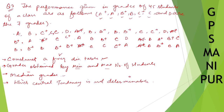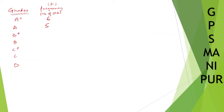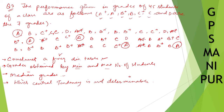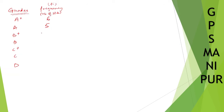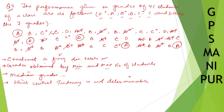How many students got A? Let me circle them — one, two, three, four, five — so five students got A. How many students got B+? One, two, three, four, five, six, seven, eight, nine — so there are eight students who got B+.